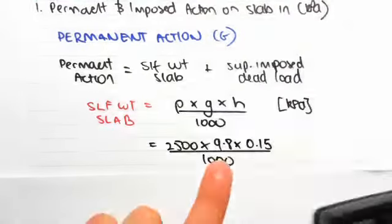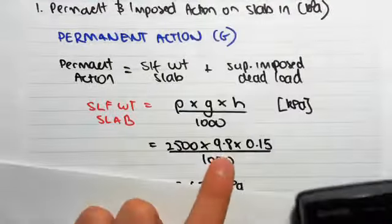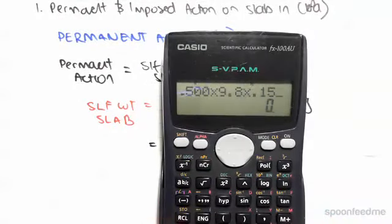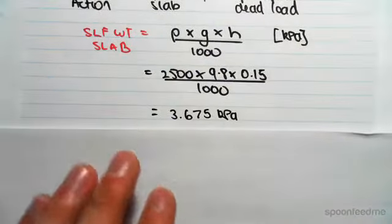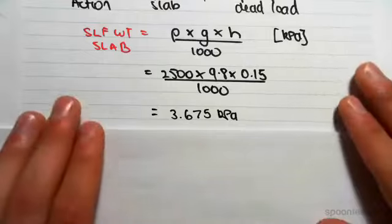So 2,500 by 9.8 by 0.15 gives us an answer in pascals, and then we divide through by 1,000 to give us an answer in kilopascals. So 3.675 kilopascals is the self-weight of the slab.